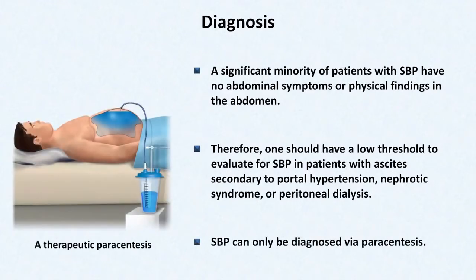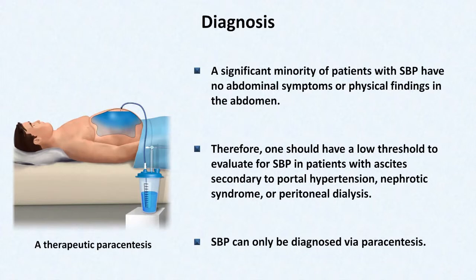A paracentesis is a bedside procedure in which a needle and catheter are introduced transcutaneously into the peritoneal space and fluid is removed via aspiration. A diagnostic paracentesis is one in which only a small amount of fluid is removed in order to diagnose the etiology of the ascites or to rule out SBP. A therapeutic paracentesis is one in which a large amount of fluid is removed to improve symptoms such as pain and shortness of breath.